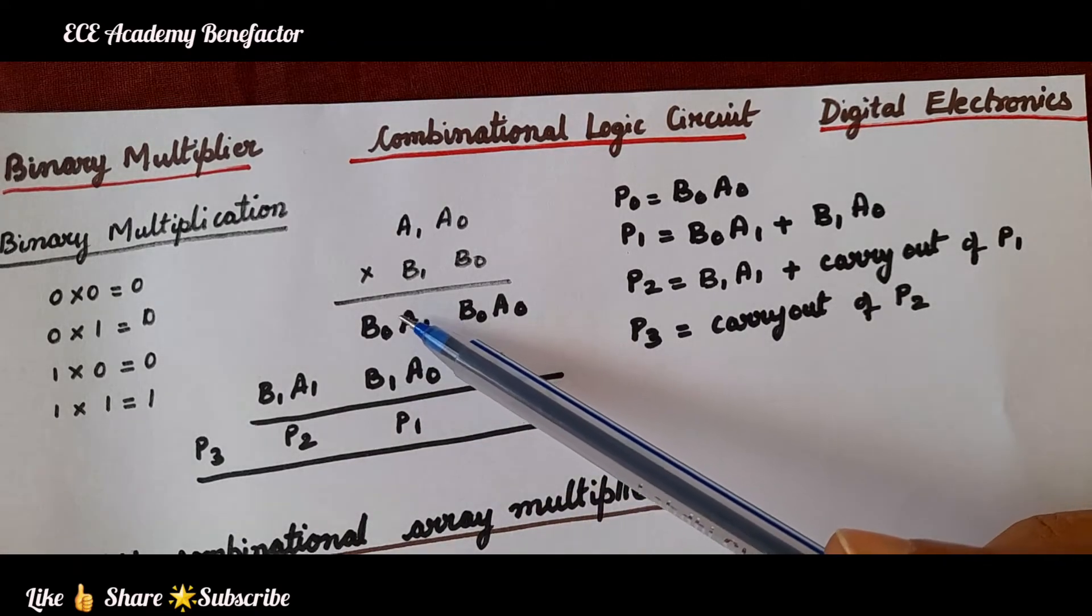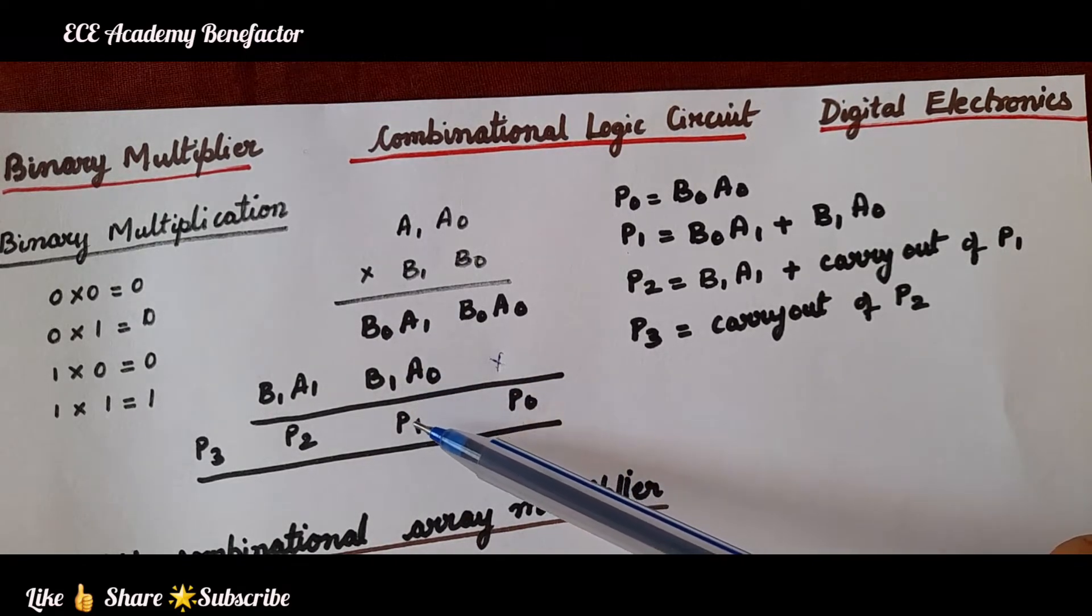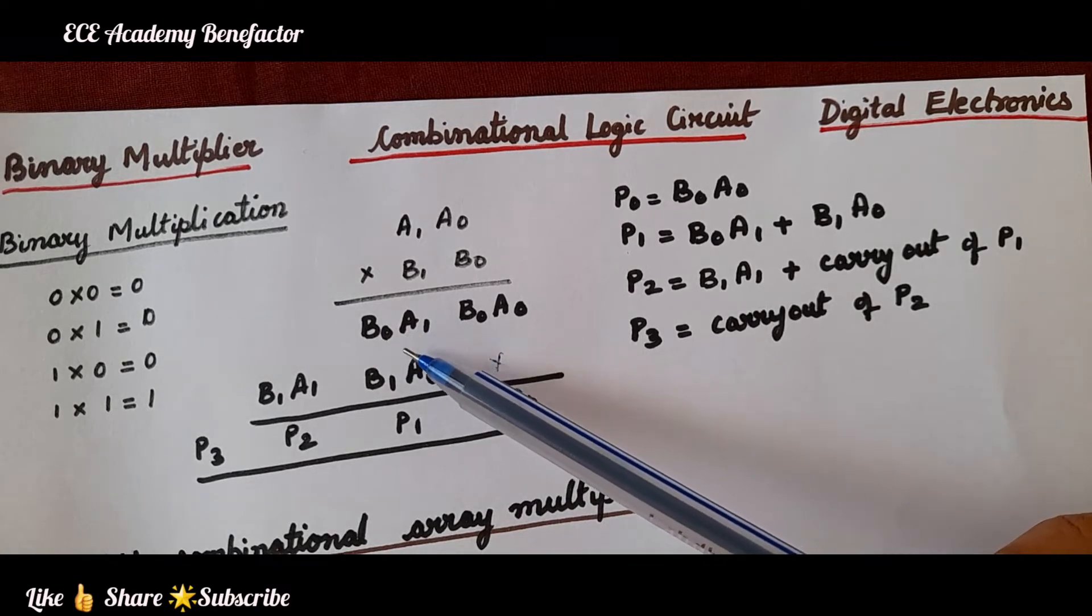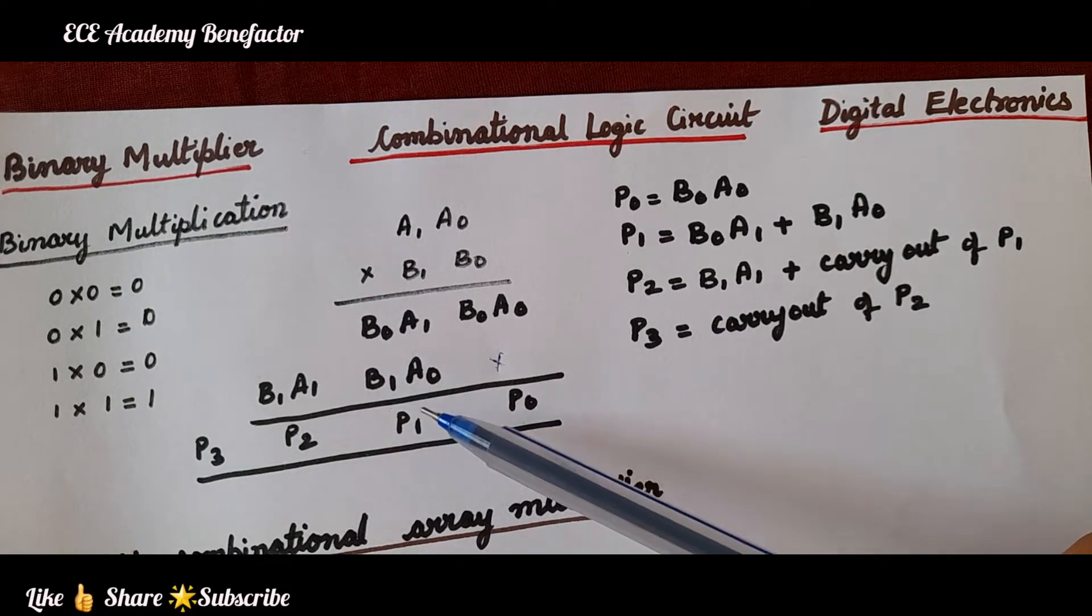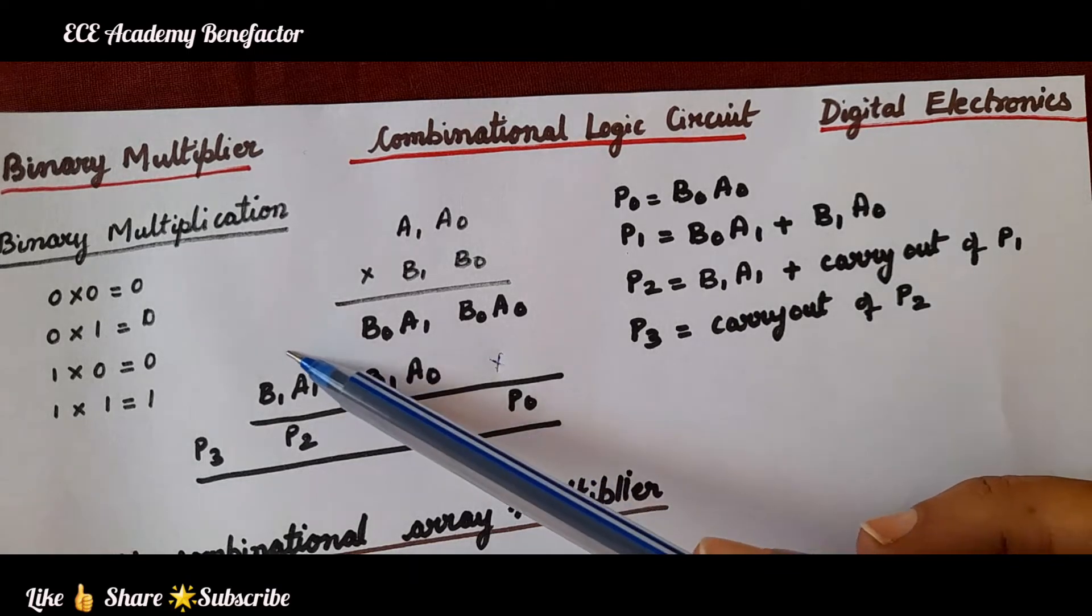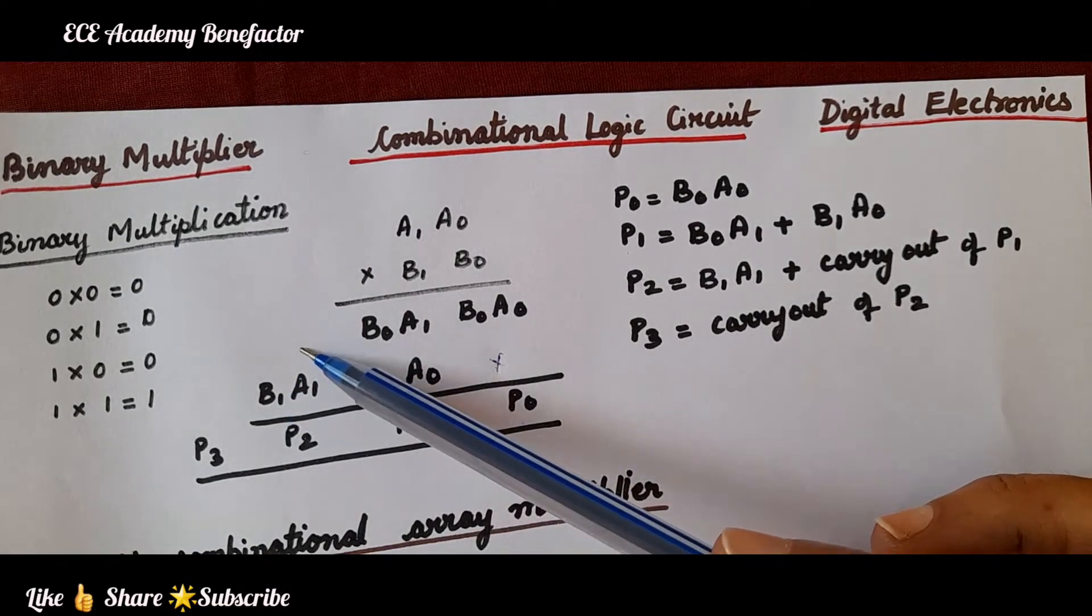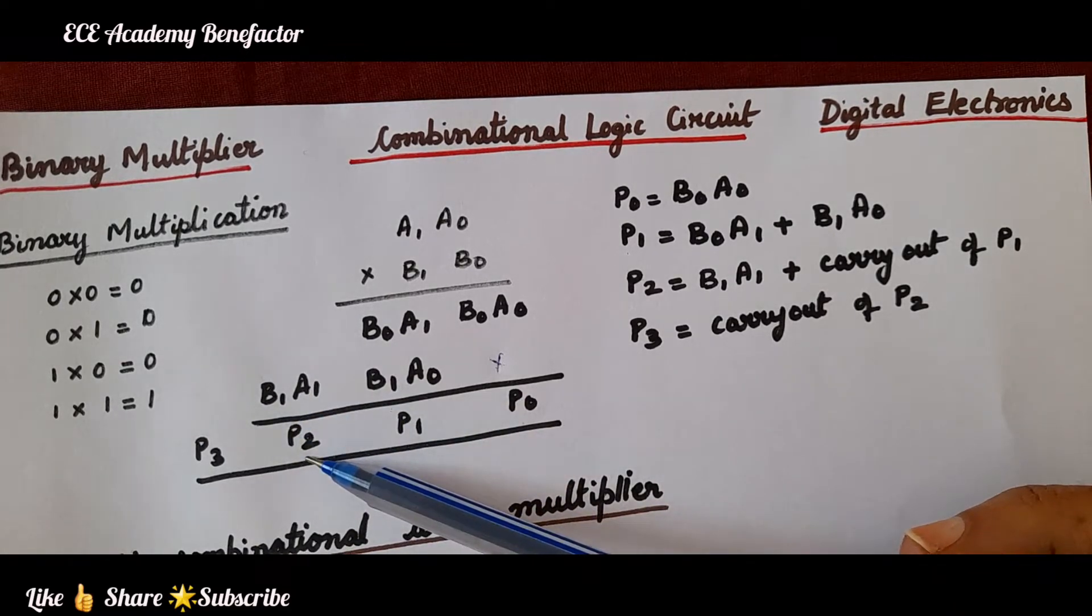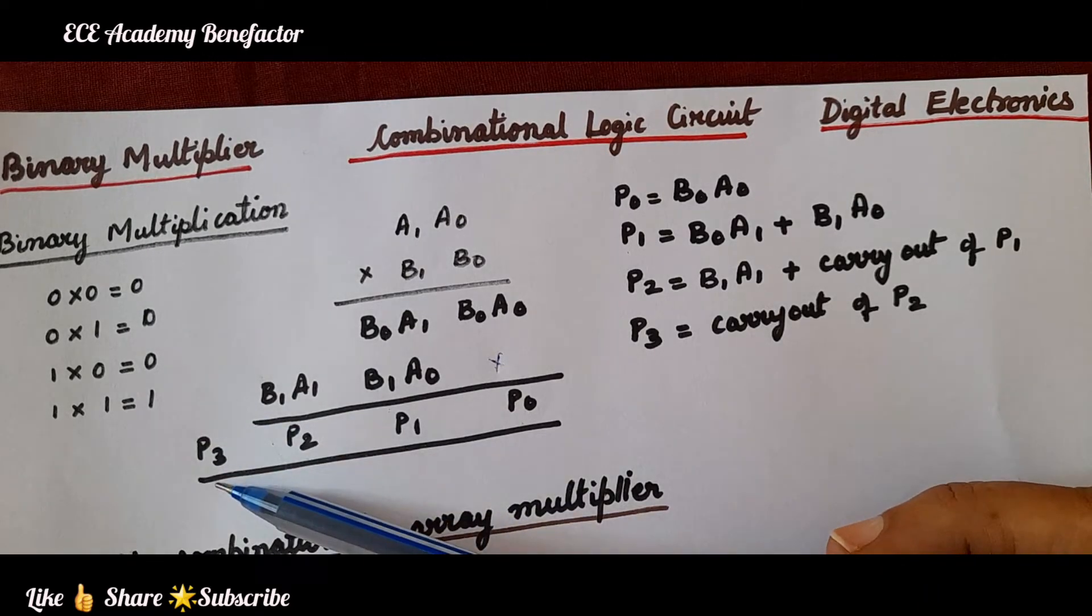How do we add 2 binary numbers? Using adders, binary adders. As there are 2 bits in it, we will use half adder to generate p1. Now, the next one is whatever the carry that is generated here will be transmitted here and that carry will be added to this b1a1 to get the product p2, and if any carry generated it will be appearing as p3.